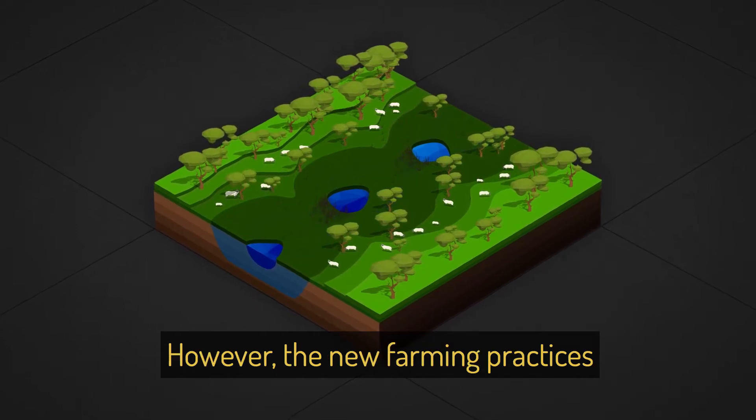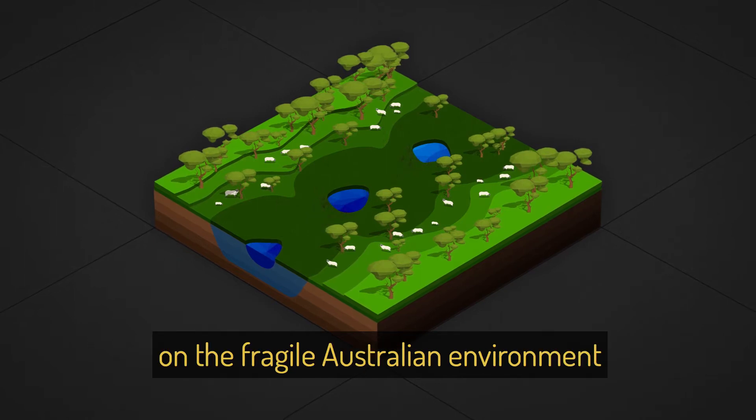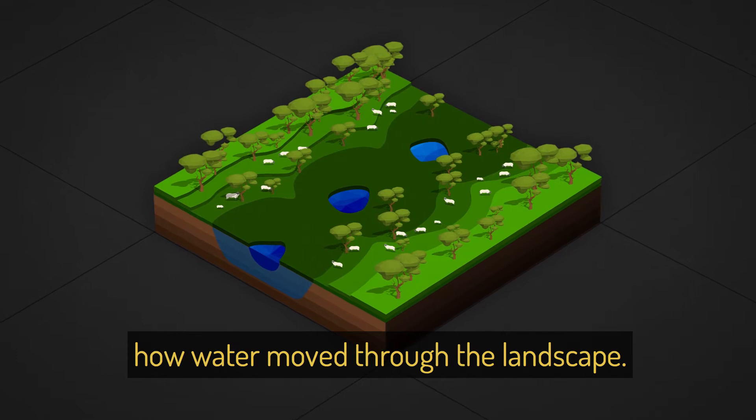However, the new farming practices had major impacts on the fragile Australian environment and dramatically changed how water moved through the landscape.